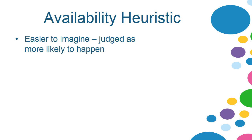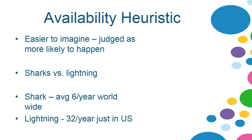The availability heuristic occurs because people judge things as more likely to happen if those things are easier to imagine. I illustrated this with the sharks versus lightning question. Most of you probably said more people die from shark attacks than from lightning strikes. But actually, far more people die from lightning. On average, there are six fatal shark attacks worldwide, whereas just in the US there are 32 fatal lightning strikes per year — nearly five times as many.